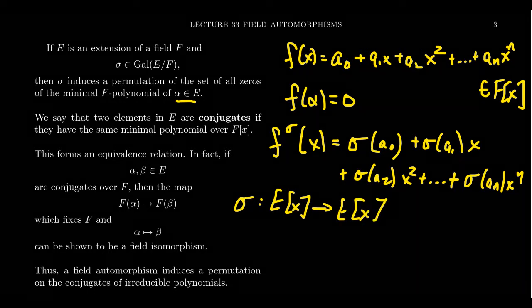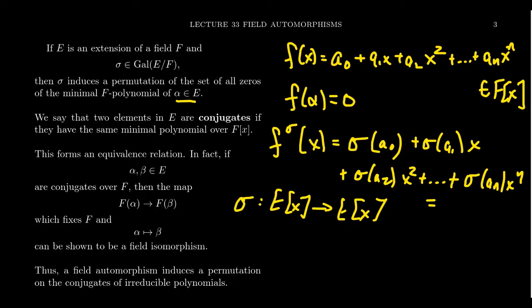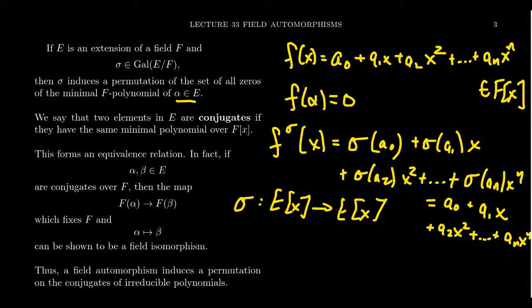With F specifically, all of the coefficients of F actually belong to the field F. Since sigma belongs to Gal(E/F), it doesn't do anything to those coefficients. So you end up with just A₀ plus A₁X plus A₂X² all the way down to AₙXⁿ — the polynomial is just going to be F(X). The coefficients don't change when you apply sigma. The polynomial F is fixed by sigma as well.